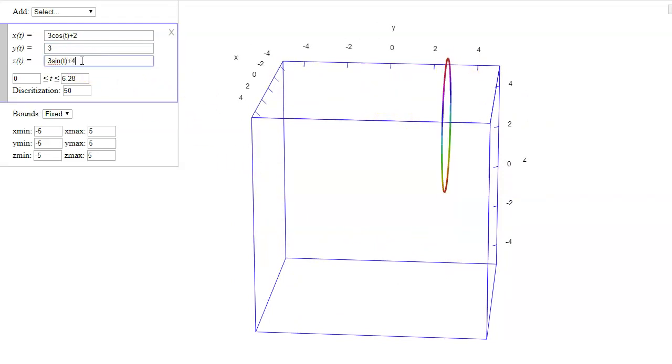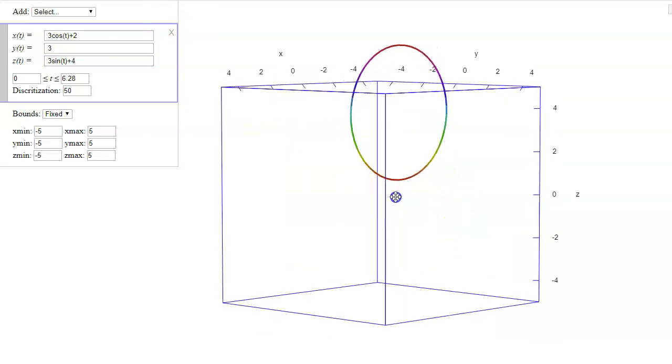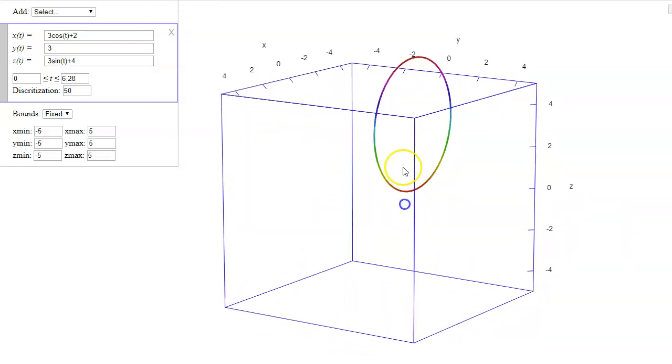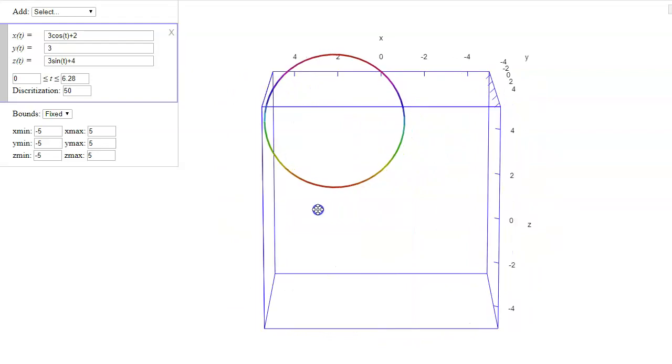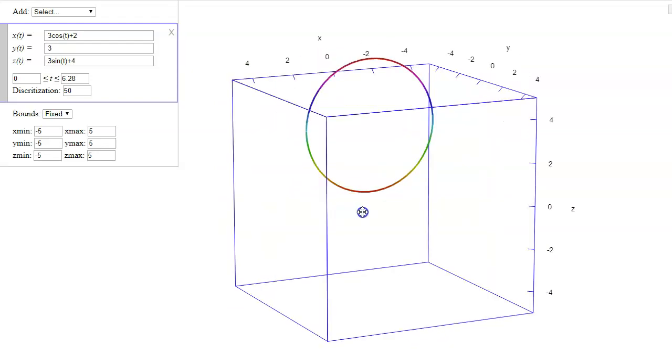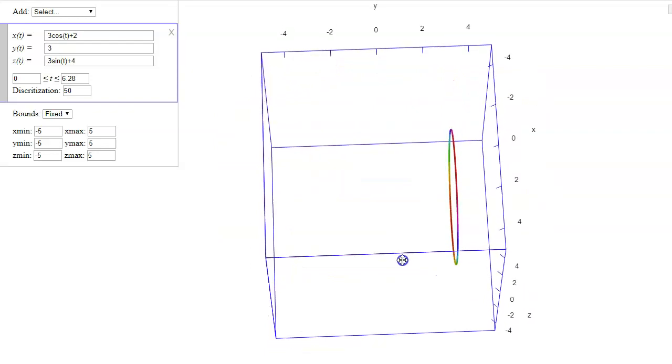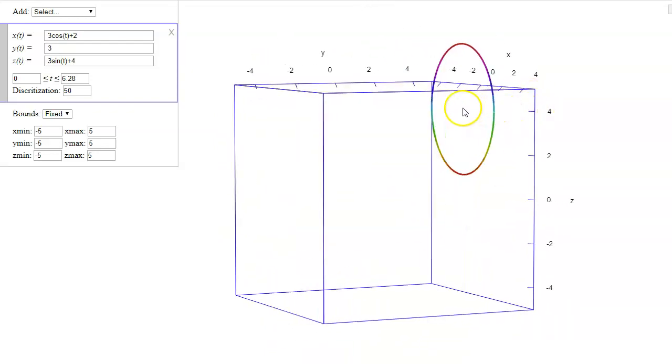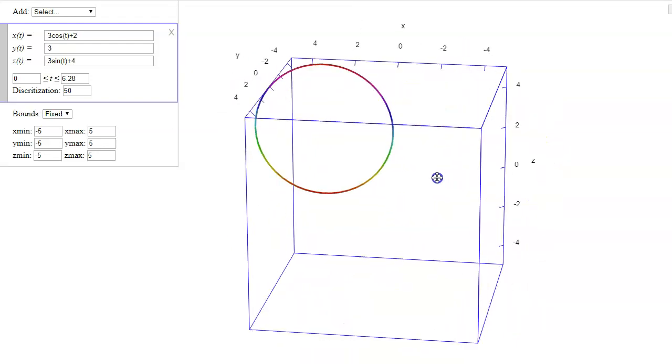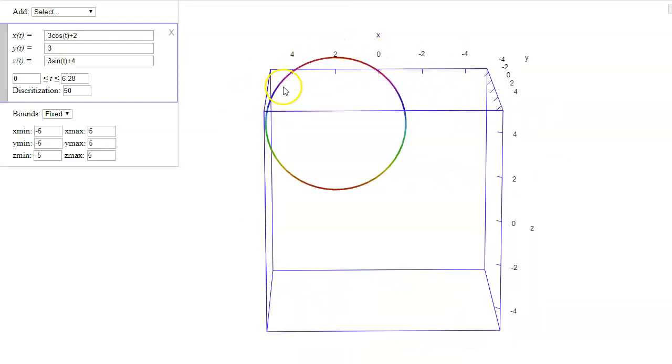And my z's we shifted by 4. So we shifted up 4. So the center of the circle now is at an x value of 2, a y value of 3 and a z value of 4. So there's the center of the circle. And then we're getting that rotation in x and z with a radius of 3.